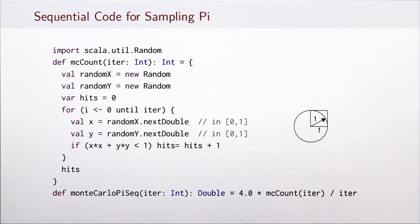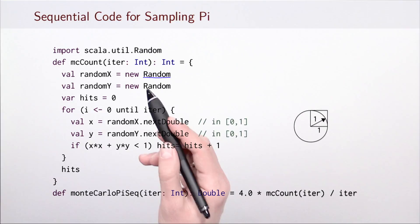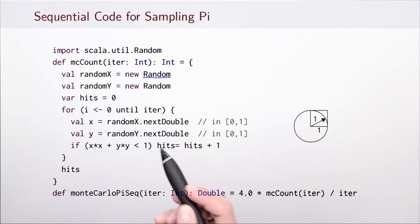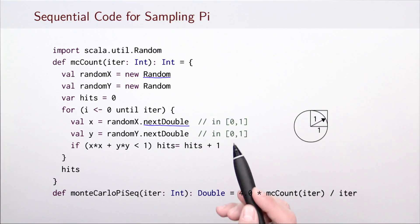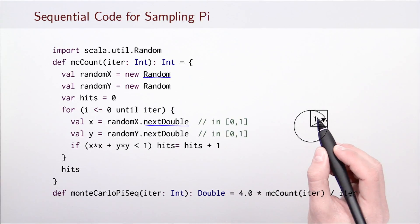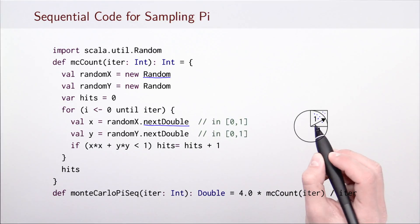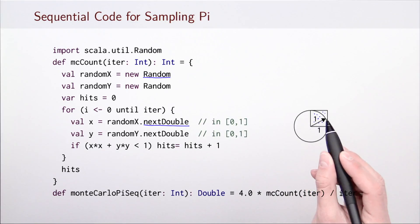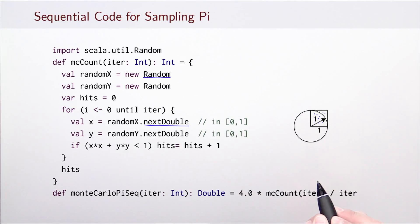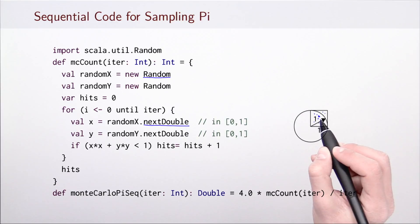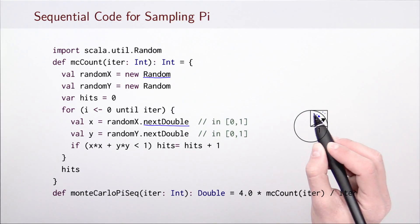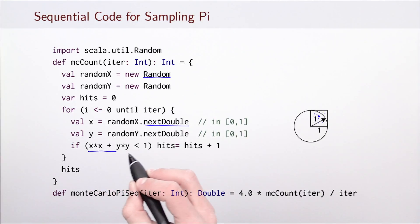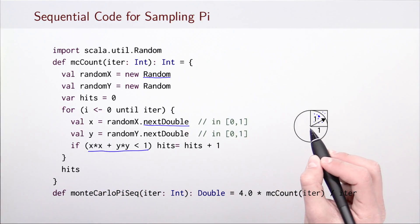Here's sequential code that implements this idea. We use pseudo-random generators from the Scala library in order to implement sampling of points. Given two instances of the random class, we can use the method nextDouble to obtain a floating point number in the interval 0 to 1. If we get two such floating point numbers, we'll be getting points inside the quarter of the square that we considered. Then to test whether these two coordinates correspond to a point inside the circle,